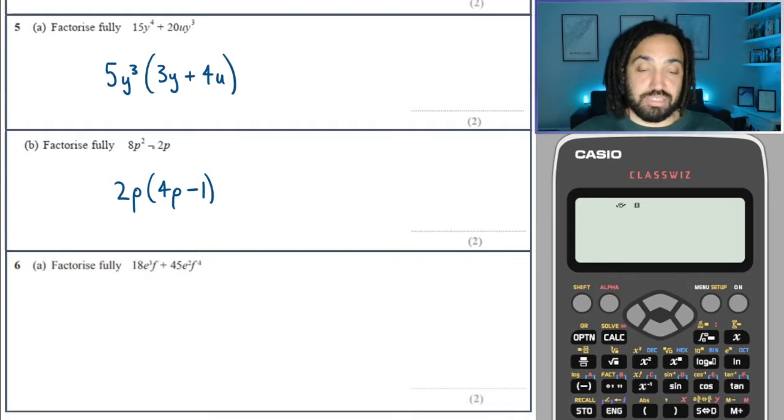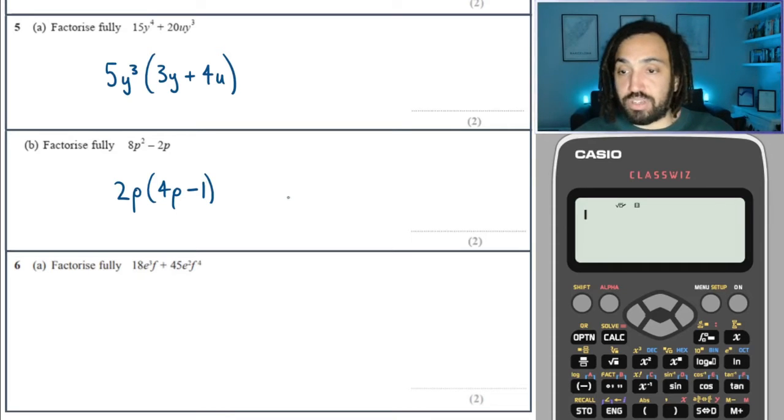And when you divide anything by itself, you are left with one. So minus one there, minus because there's a minus sign in the middle, and one because I've divided the whole of that term by itself. So one is left over.